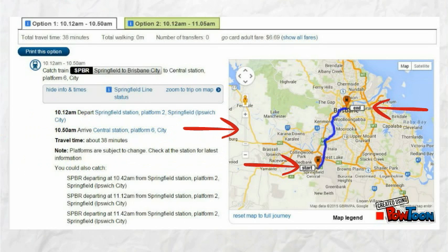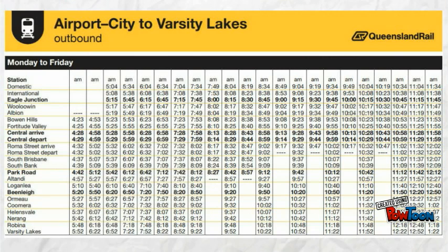This is another example of a timetable. This is a printed timetable found at your local train stations, or a PDF version which can be found online. This timetable shows you all the stations the train will stop at and the times the train comes.